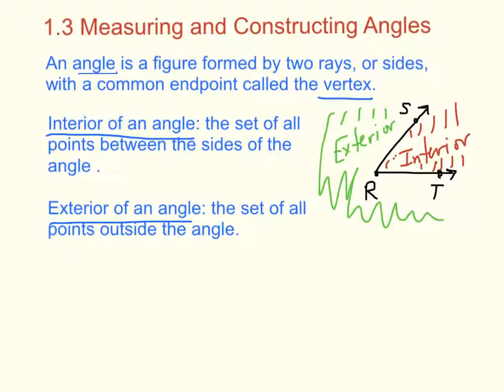Now, naming an angle. This is very, very important. You can name an angle in several ways. You can name it by its vertex. So if we're looking at the angle over here, I can name by the vertex, I can name it angle R. I can also name it by using a point on each ray and the vertex, but the vertex has to be the middle point. So I can name this angle by using S, R, T, or T, R, S.